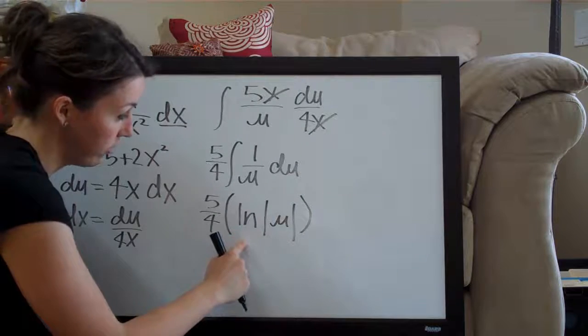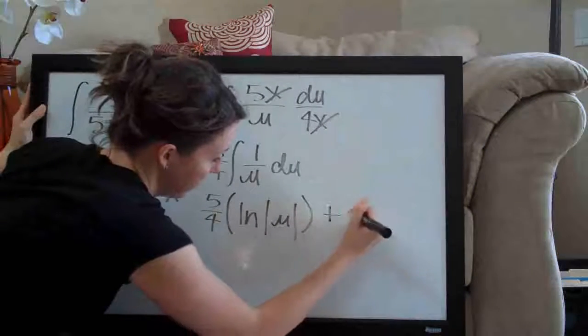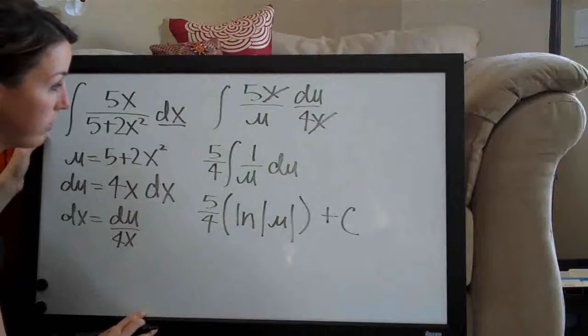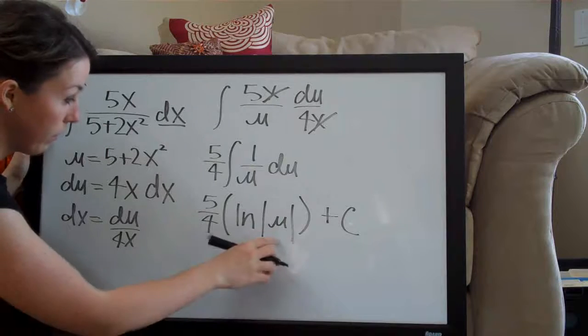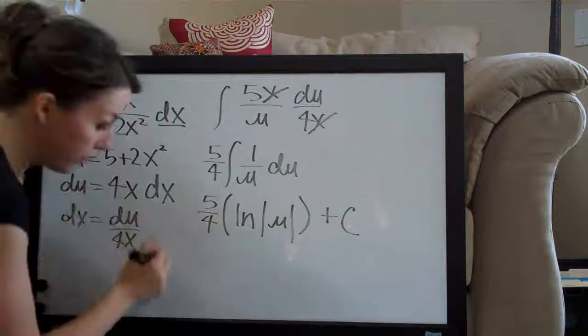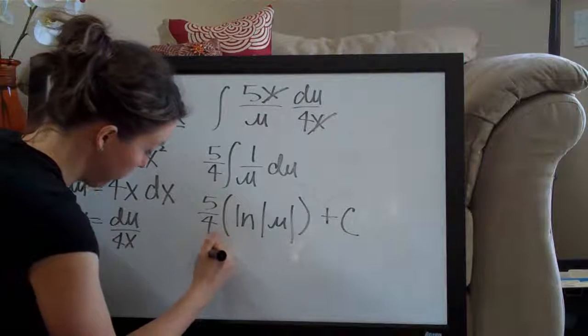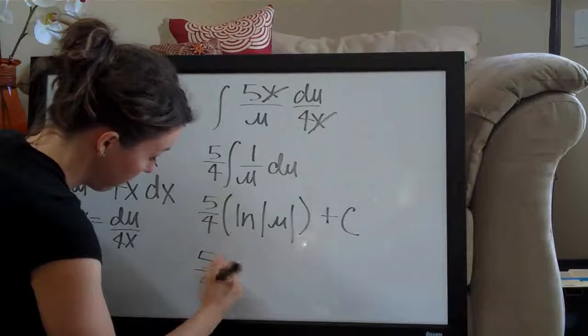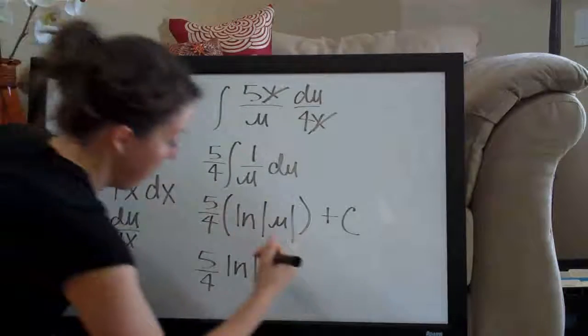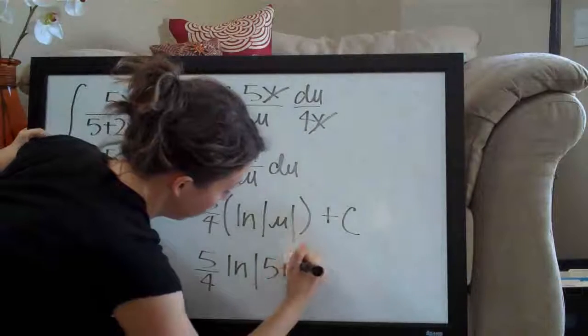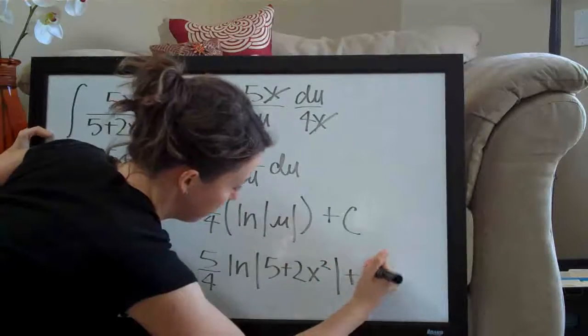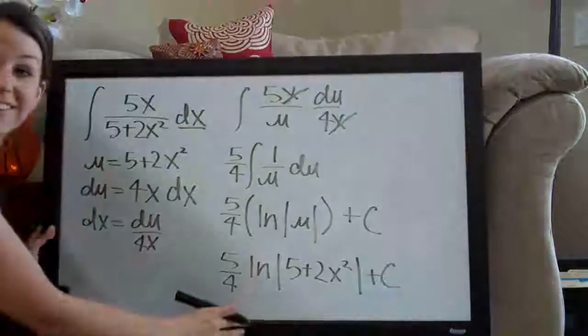And then the only thing left to do here is plug in for u, remember we assigned u to 5 plus 2x squared, so our final answer is actually 5 fourths times natural log, the absolute value of 5 plus 2x squared plus c. And that's it. See you guys next time.